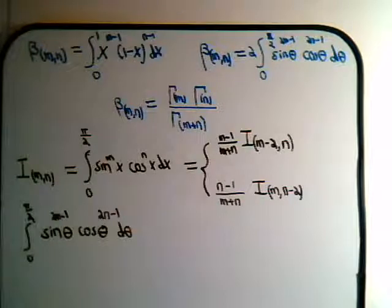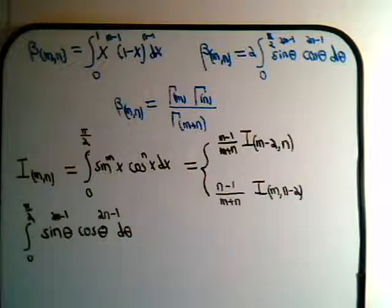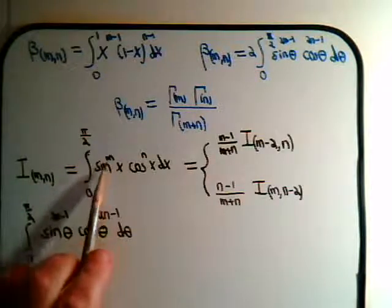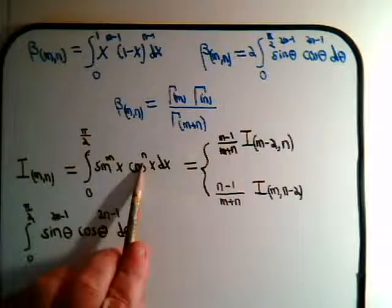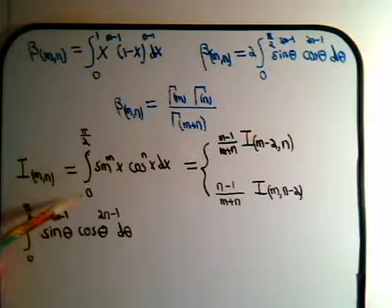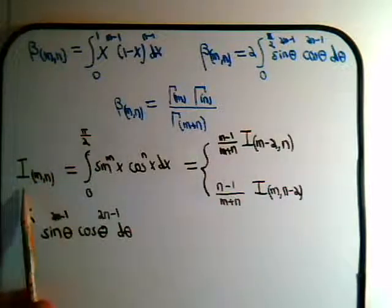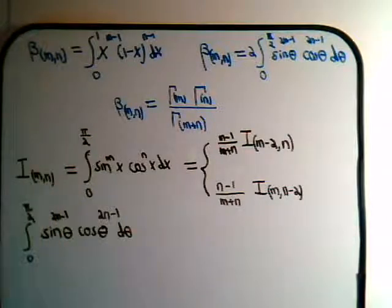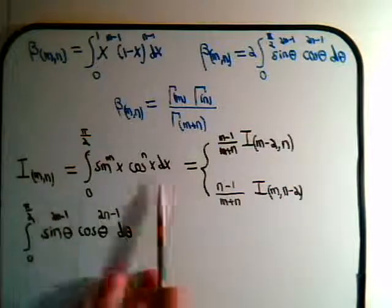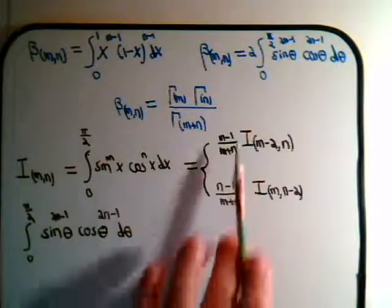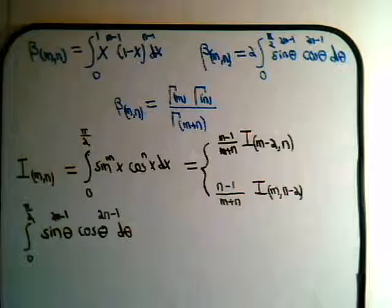Before we get started, we want to point out that in one of our earlier videos on integration techniques, we derived the reduction formula for different types of trig integrals. One of them was the integral where the sine is raised to a certain power, the cosine is raised to a different power, and the limits go from 0 to pi over 2. That integral we abbreviate as I(m, n), and we derived two different reduction formulas for it. If this looks unfamiliar, you might want to go back and look at those previous videos.